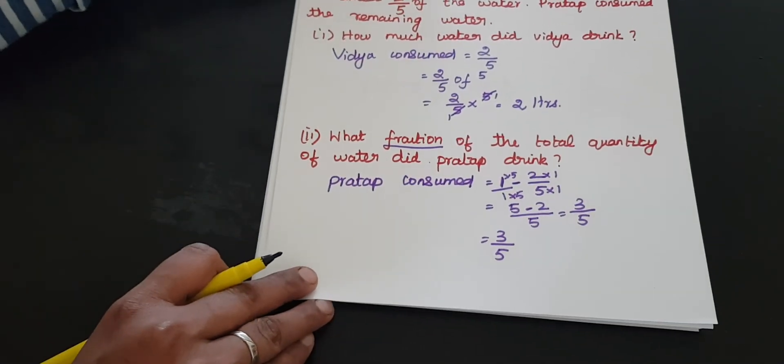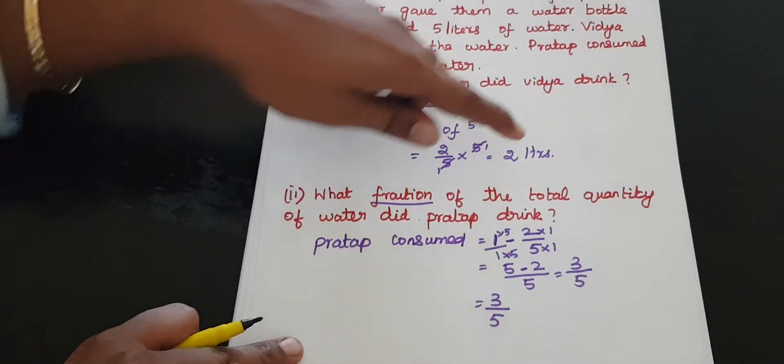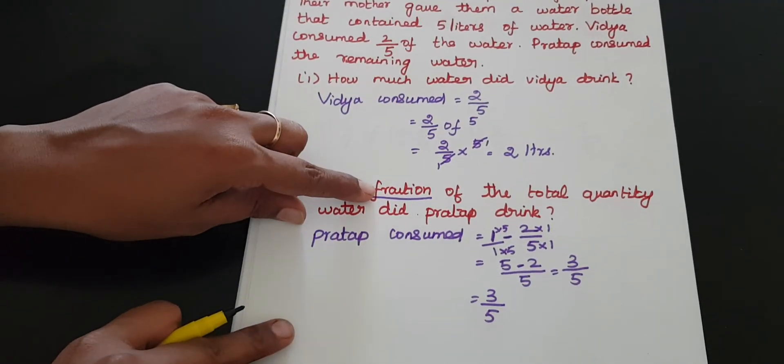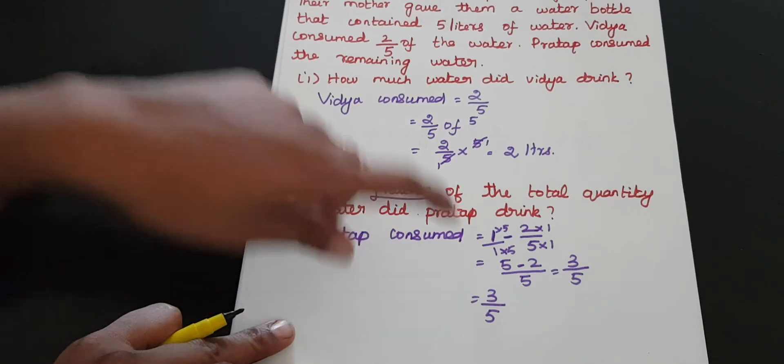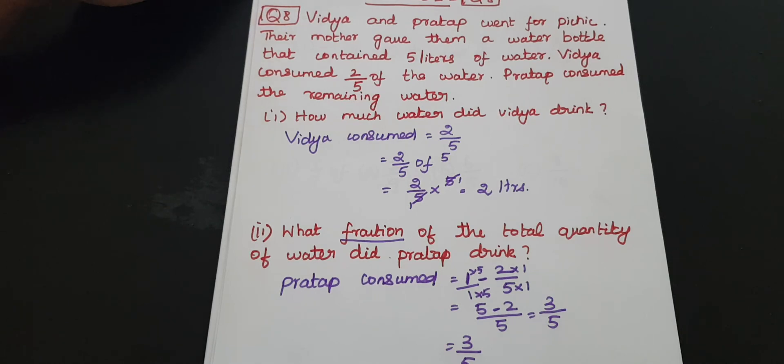So Prathap consumed 3 by 5, the fraction. We need fraction, not litres. 5 minus 2 gives 3 litres, but the fraction is 3 by 5.